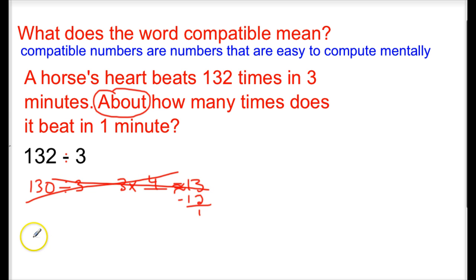We finally got to 120 divided by 3, and we tried this. From there, we decided that 3 times 4 is 12, and then when we subtracted that, we would not get a remainder. So we're looking at 12 divided by 3, which gave us 4, and then we have our 0. So we can answer about how many times does it beat in a minute, and that answer would be about 40 times in 1 minute.